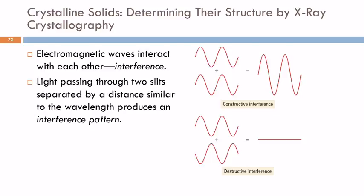So we've talked about this before. Electromagnetic waves interact with each other. They cause interference. And you can have constructive interference or destructive interference. And so what we do is we use x-rays and pass x-rays through the crystal and look at the interference patterns that are produced.